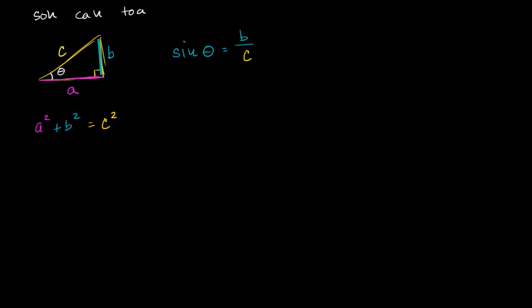Now what is cosine of theta? Cosine of theta, well, the adjacent side, the side of this angle that is not the hypotenuse, it has length a. So it's the length of the adjacent side over the length of the hypotenuse.